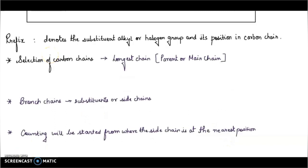Moving to the prefix part — it denotes the substituent alkyl or halogen group and its position in the carbon chain. Now I'll talk about selection of carbon chains. The longest chain is selected and is called the parent or main chain. Let's start with an example. In this case there is no side chain, so we can start our counting from any side.